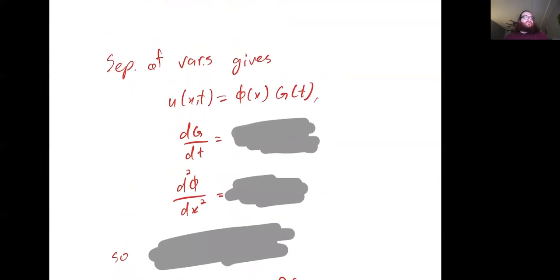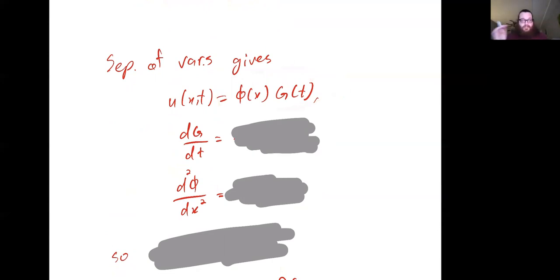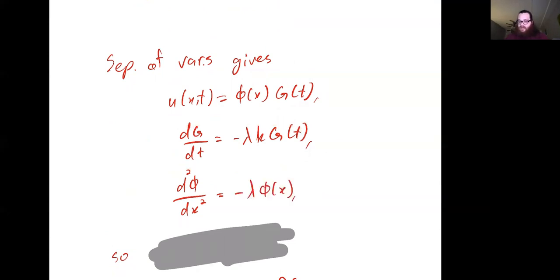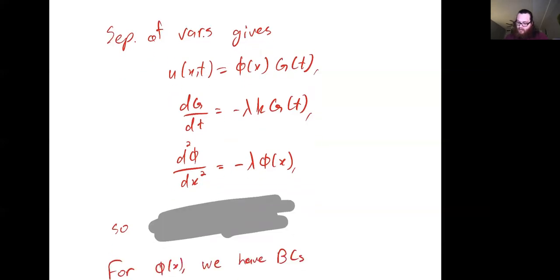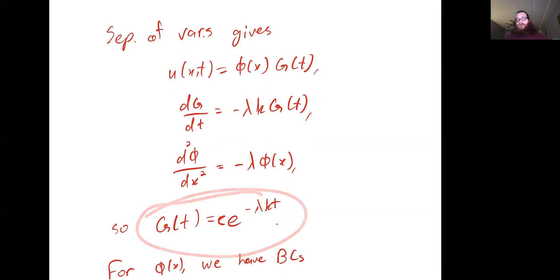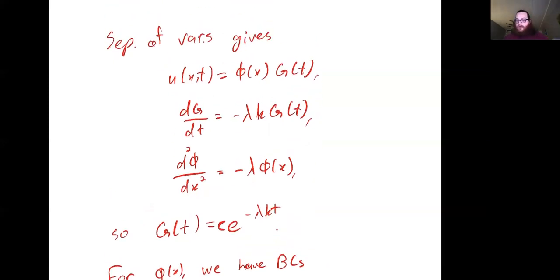If we carry through with the separation of variables technique, we write u as a product of φ — some function just of space — times g, some function just of time. The resulting ODEs: the ODE for g is dg/dt = −λk·g, giving g as an exponential e^(−λkt). Now we need to figure out what the possibilities are for λ, as well as what the possibilities are for φ.